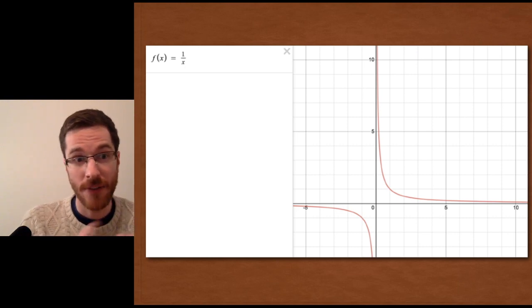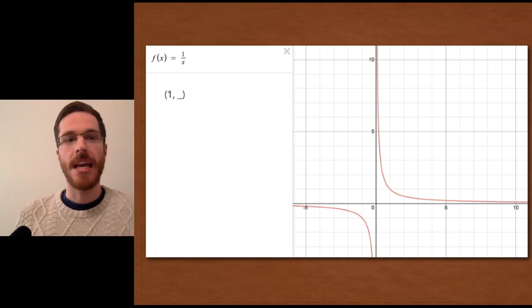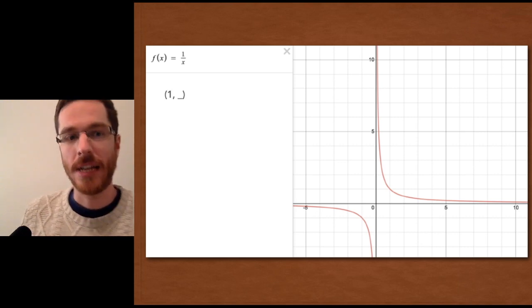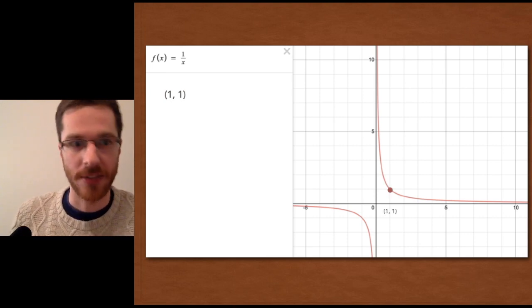So the function is f(x) equals one over x. What does that mean? Well, if you input one into the function, you will get out of the function one over one in this case. So we'll plot that there.